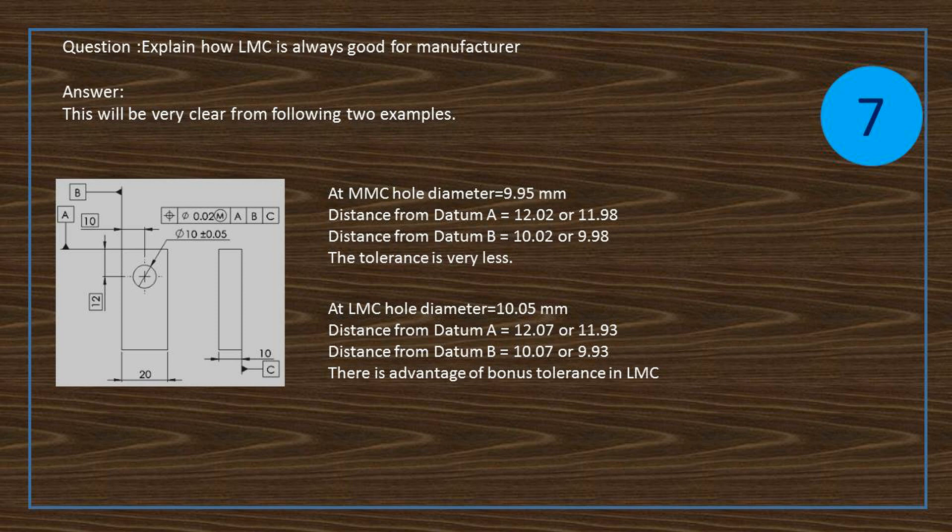At LMC, hole diameter equals 10.05 mm. Distance from datum A equals 12.07 or 11.93. Distance from datum B equals 10.07 or 9.93. There is advantage of bonus tolerance in LMC.